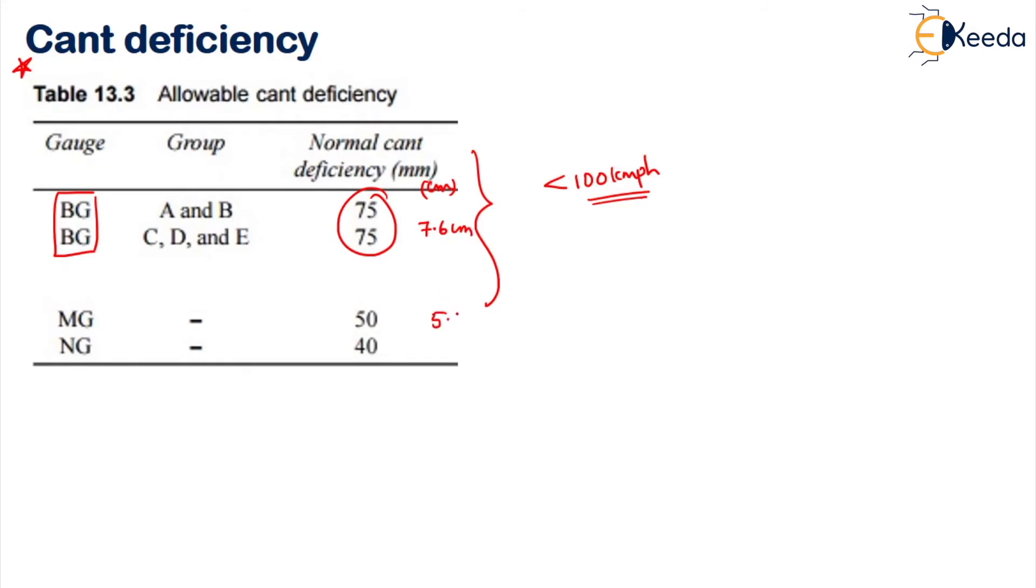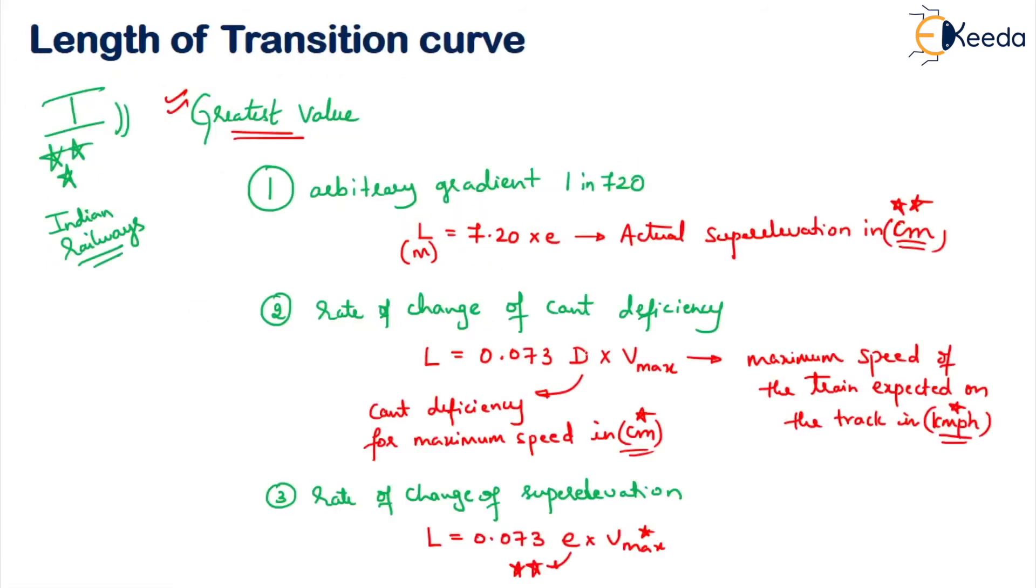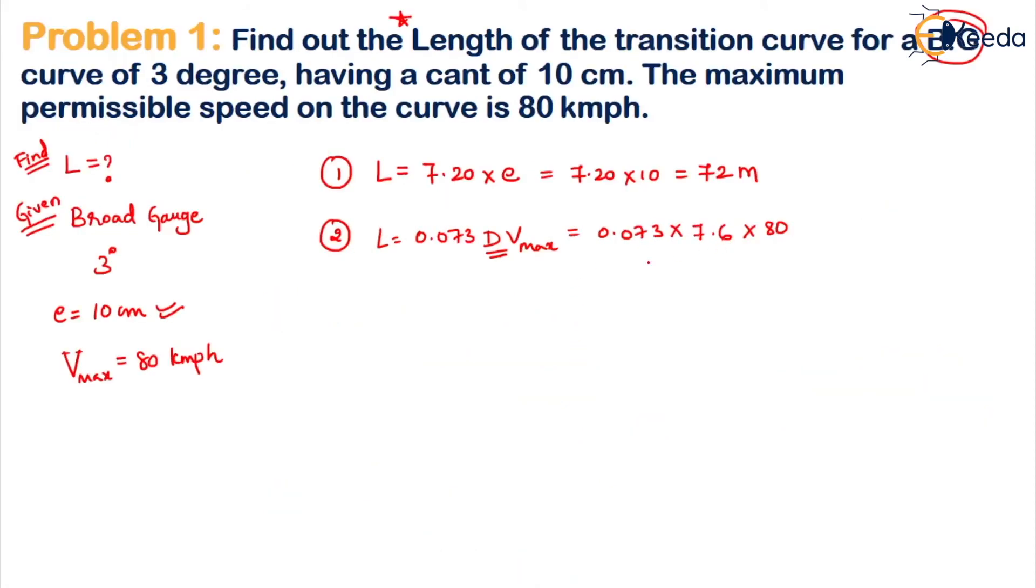These rounded values can be used. For broad gauge with maximum speed 80 kmph, D = 7.6. Substituting into the formula: L = 0.073 × 7.6 × 80 = 44.38 meters. This is from the second formula.